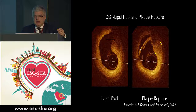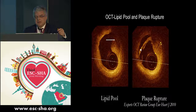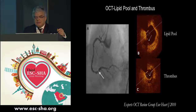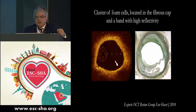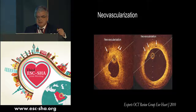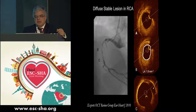This is a nice example of a lipid pool, and here you have a very nice example of a plaque rupture, which can be demonstrated by this technology because of its very high resolution. This is an example on the right coronary artery of a lipid pool with a very thin fibrous cap, and you can also demonstrate the presence of thrombus. OCT can show plaque hemorrhage — these are animal studies where you can see the correlation with pathology nicely. Here you can see a cluster of foam cells located in the fibrous cap, with a band of very high reflectivity.